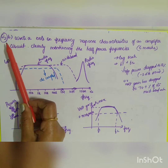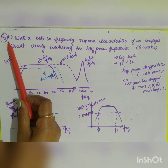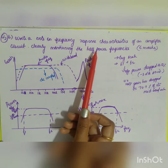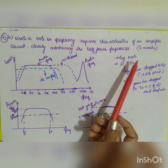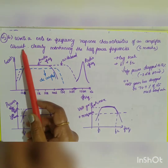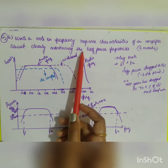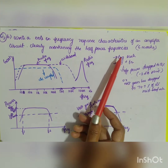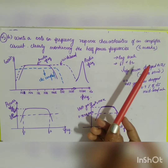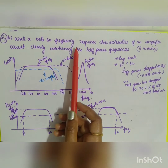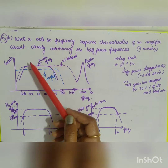The next question is question 2b: write a note on frequency response characteristics of an amplifier circuit, clearly mentioning the half power frequencies. It is asked for 6 marks, so first you have to give the diagram of your frequency response.